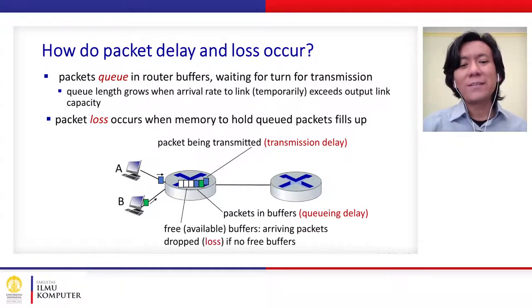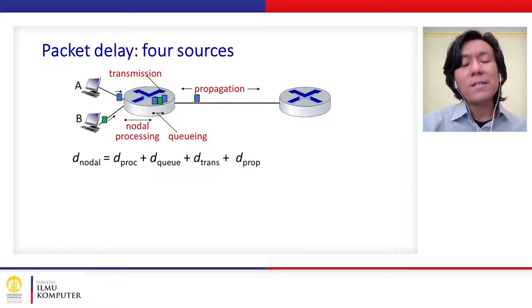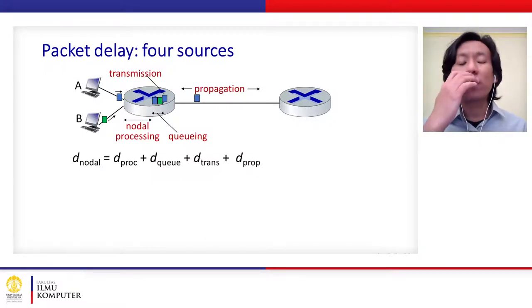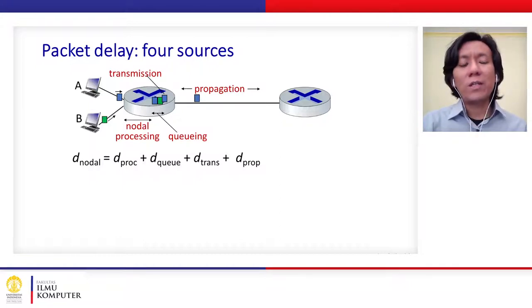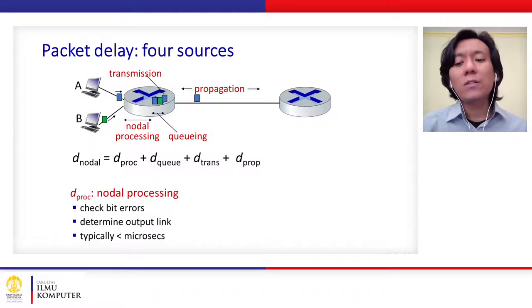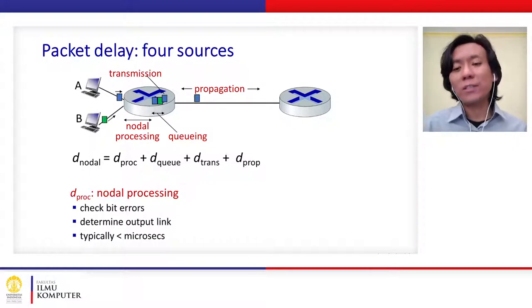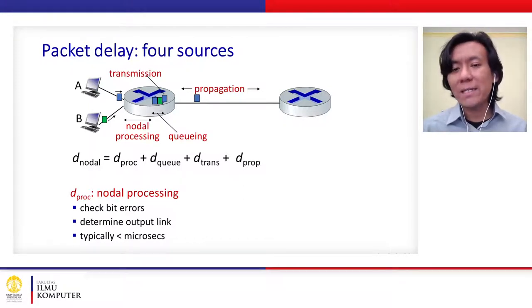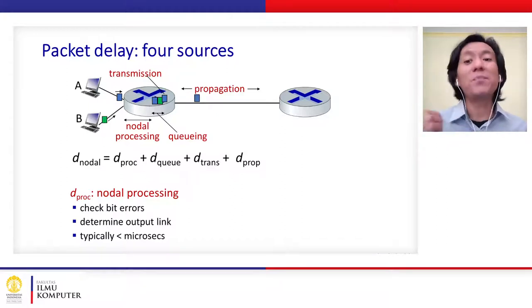There are at least four sources that cause delay for a packet when it is sent from a host to a server. The first is called nodal processing delay, which happens whenever the packet just arrives at the router — the bit checking and all related processing is called nodal processing delay.